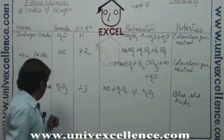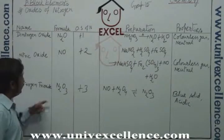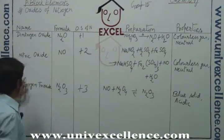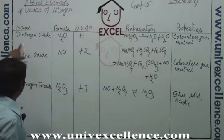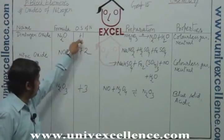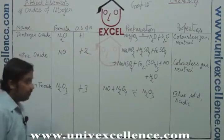Now, the next one is actually this compound, dinitrogen oxide, nitric oxide, and nitrogen trioxide, where the oxidation number actually increases from plus one, plus two, plus three.